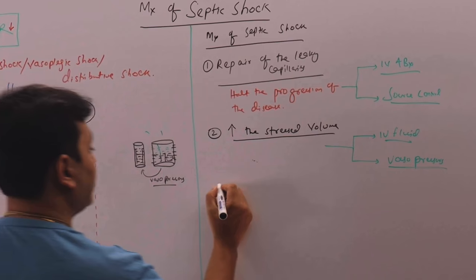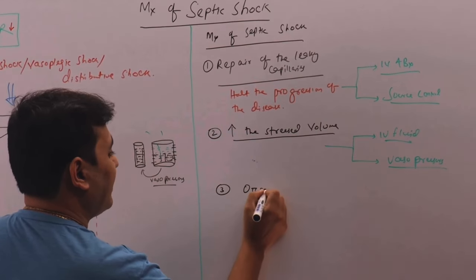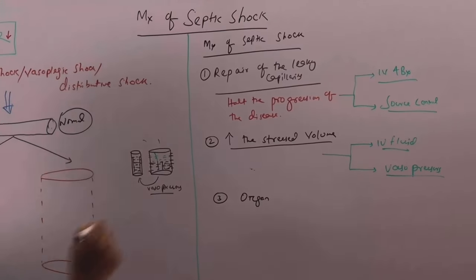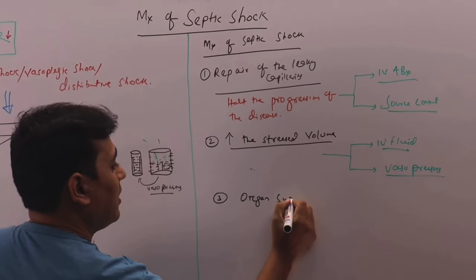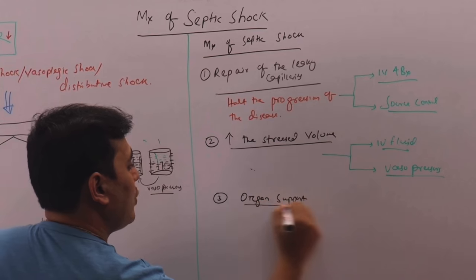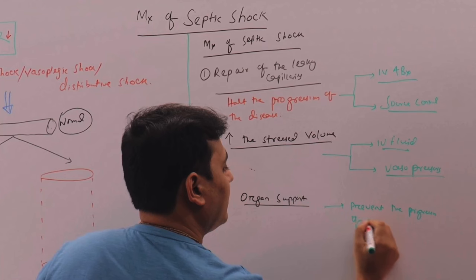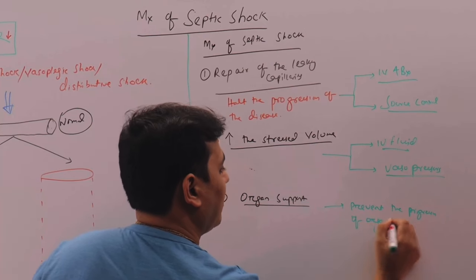Third concept and treatment will be organ support. We can see here, there are different organ dysfunctions present. So we have to support. Organ support means we have to prevent progression of organ failure.